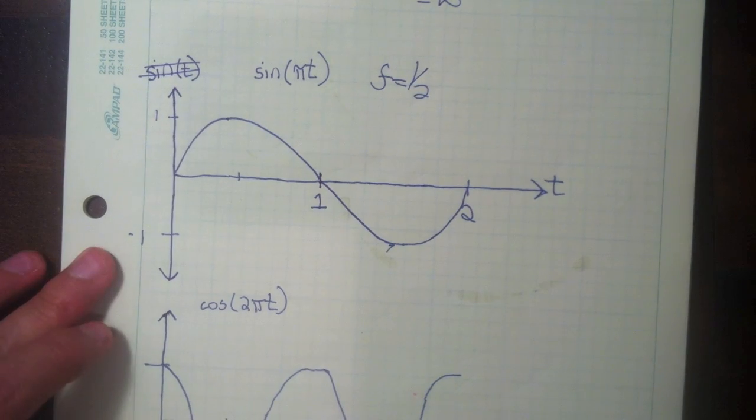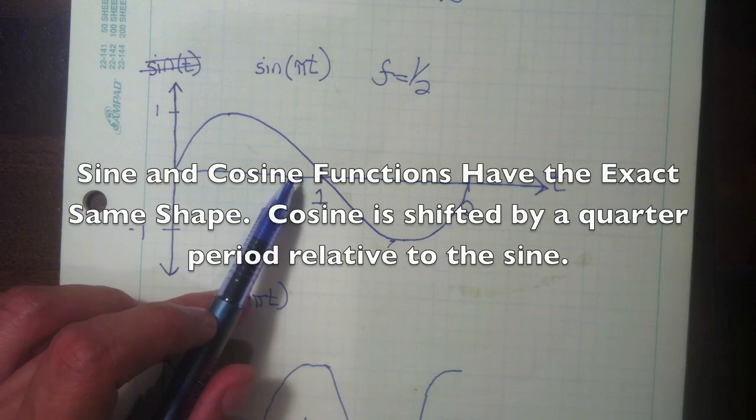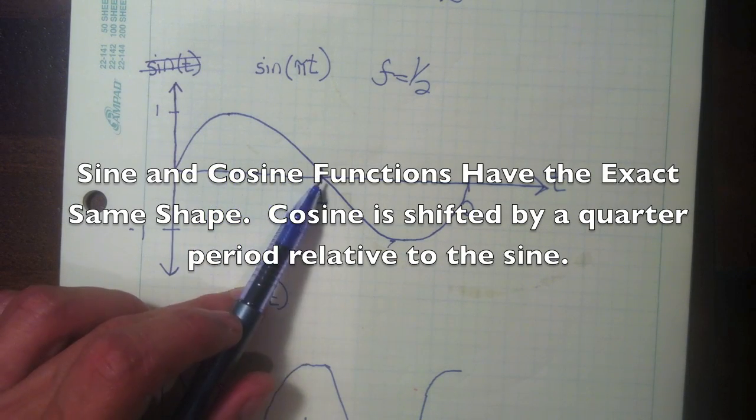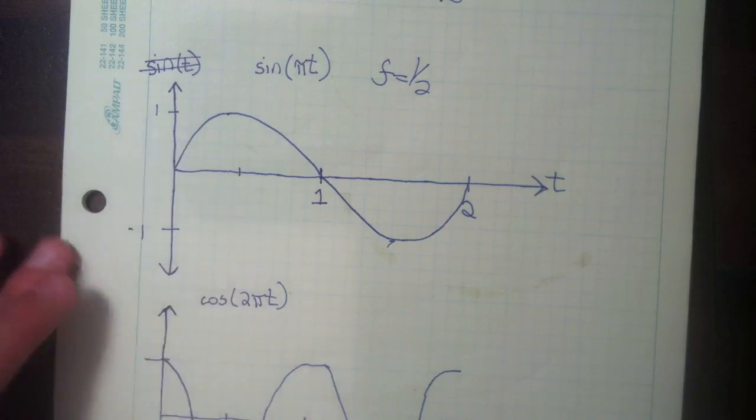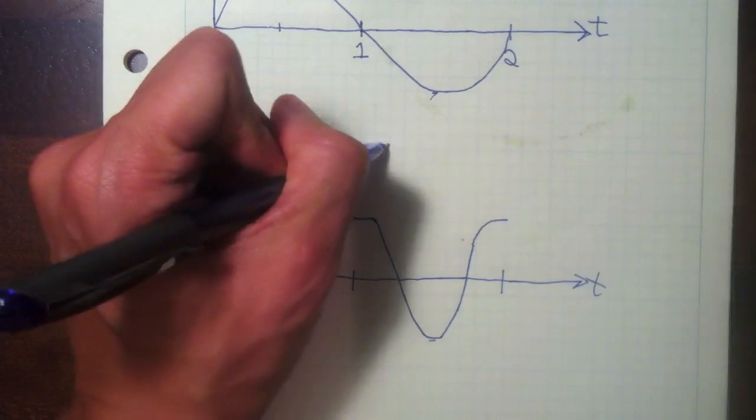And then the difference between sine and cosine is just cosine is shifted half a quarter of a period away from the sine. So here's a cosine function. This one, the frequency is one.